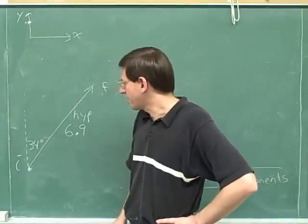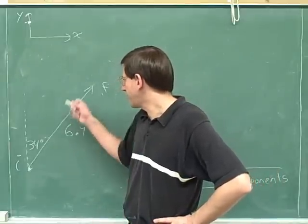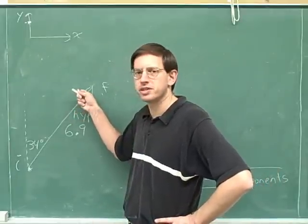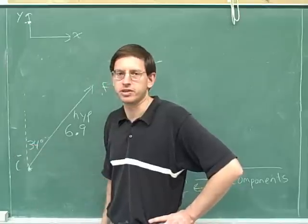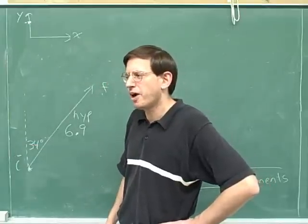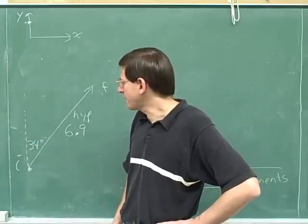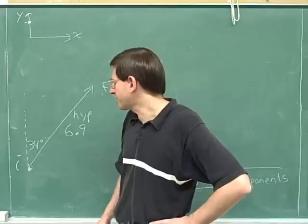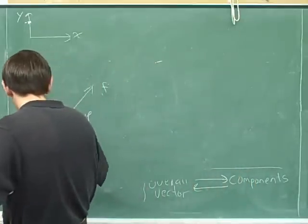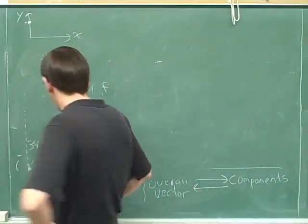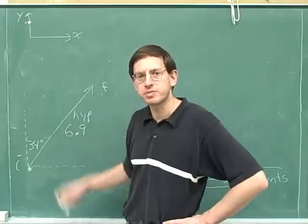The only thing you know for sure is that the tangent is always the opposite over the adjacent. So I worked out that the angle the resultant vector was forming was 34 degrees with the vertical. If you tried this problem on your own, a lot of people might have actually found the angle at the horizontal instead.